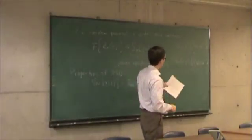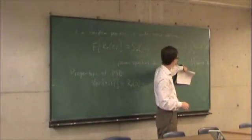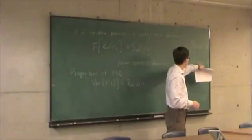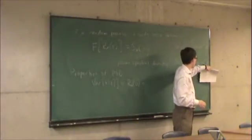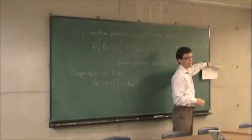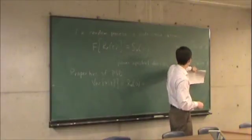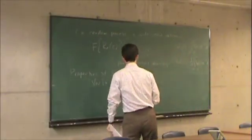What happens if we substitute zero in for tau, right here? Tau is here. What's e to the j omega zero? It's equal to one. So, what is that? That's one over two pi times the integral over the power spectral density.